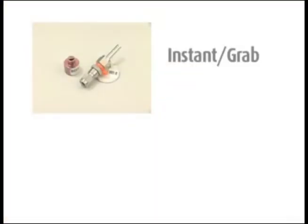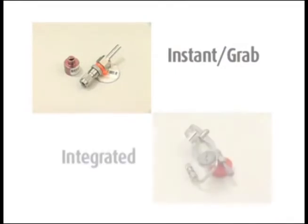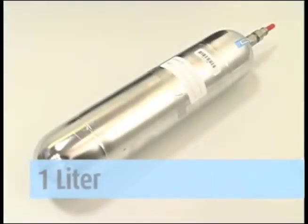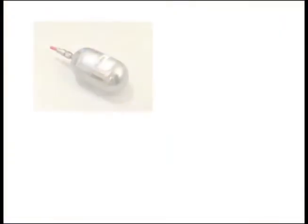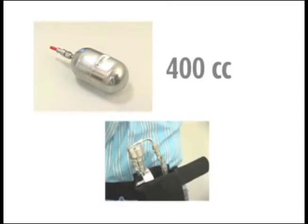You can also have two different sampling setups, instant grab or integrated. Either size can be used for either type of sampling. However, if you will be sampling for more than 8 hours, you should use the 1 liter size can. And if you are going to take a personal exposure sample, you should use the 400 cc size with the tubing and belt holster combination.